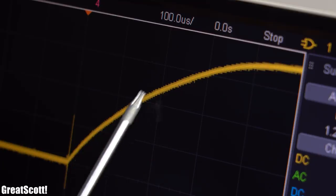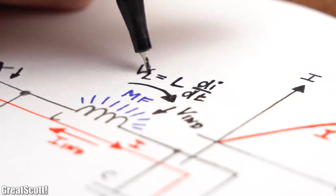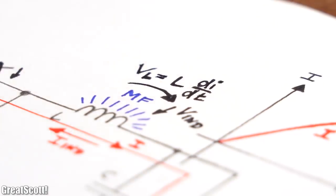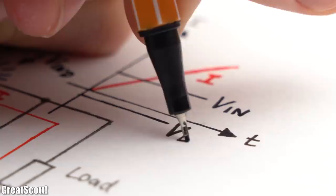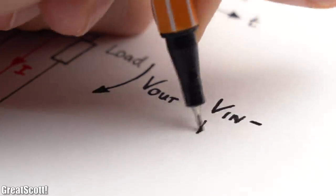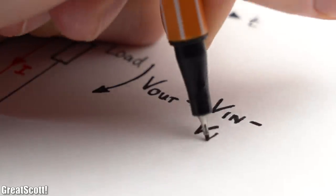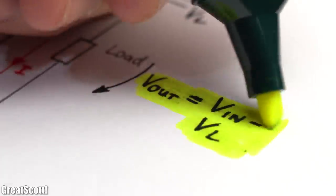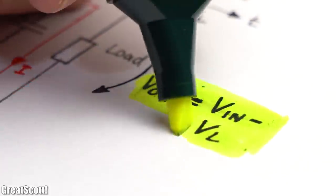While the current is now slowly rising in a relatively linear fashion, the voltage across the coil is corresponding to this equation pretty much constant and also opposite in comparison to the input voltage. That means the output voltage equals the input voltage reduced by the voltage across the coil, which therefore means that we successfully step down the voltage at the output.